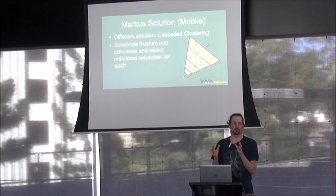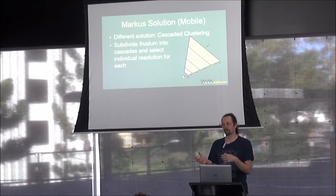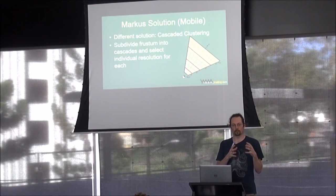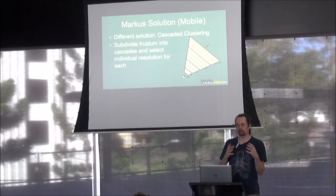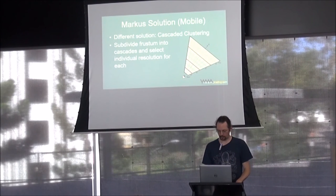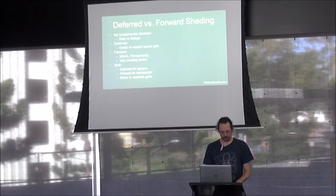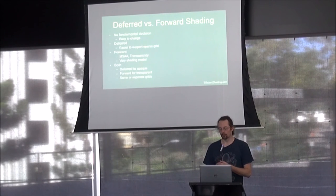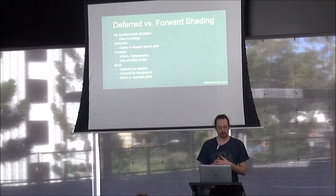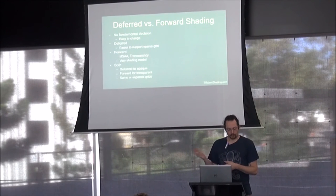The intuition for light assignment: you want as short as possible light lists for every pixel, but no shorter — otherwise you waste time building lists. You want rough size equality between cluster size and light source size — clusters should be smaller but not too much smaller than your average light source. The trade-off between deferred and forward shading is not a fundamental decision with tiled or clustered shading; it's easy to switch. With deferred it's easier to support the sparse grid, but with forward you can have MSAA, transparency, and different shading models.